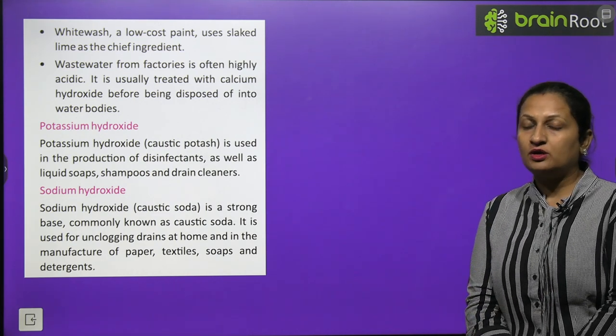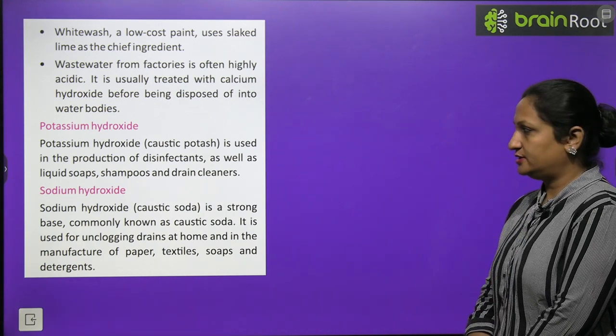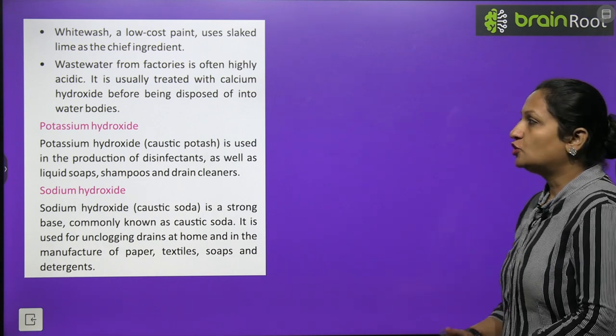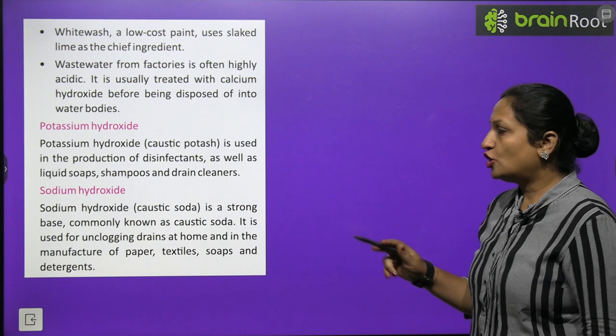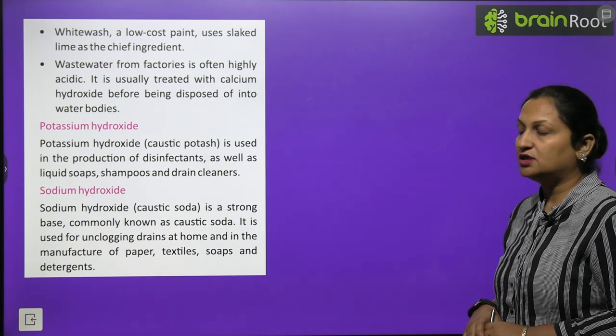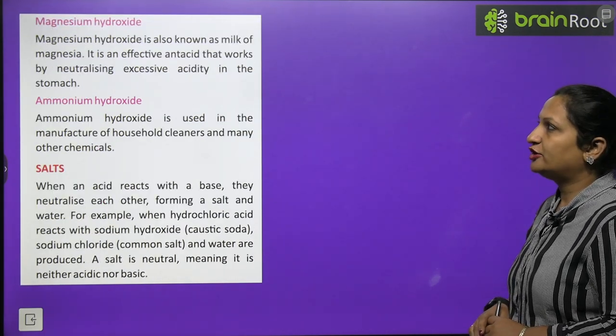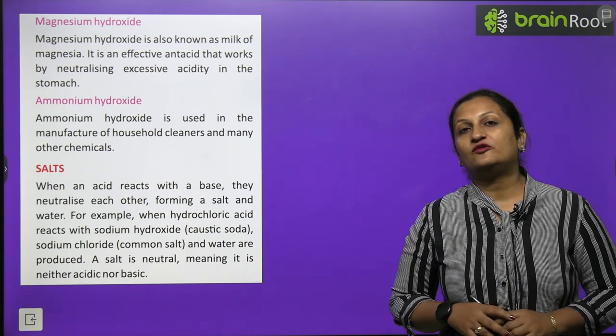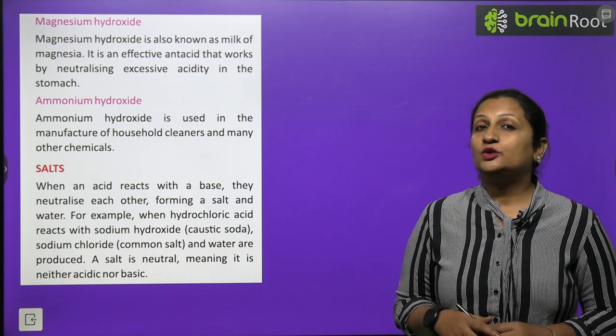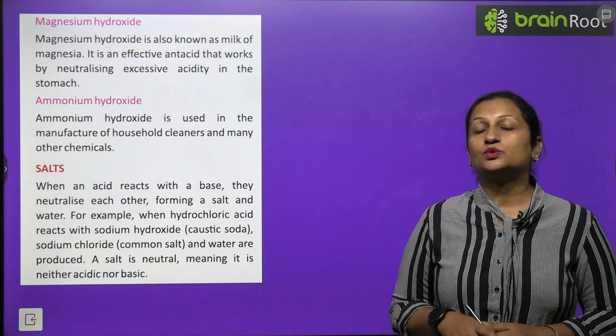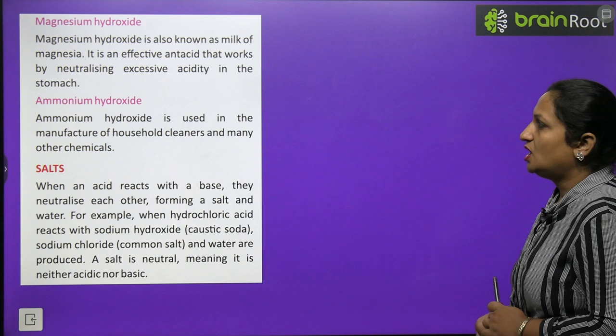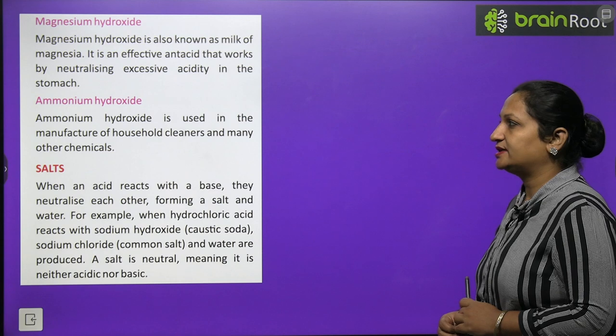Potassium hydroxide, caustic potash, is a very strong base which is used in the production of disinfectants, liquid soaps, shampoos, and drain cleaners. Sodium hydroxide is a strong base, commonly known as caustic soda. Potassium hydroxide we call caustic potash, and sodium hydroxide we call caustic soda. It is used for unclogging drains at homes and in manufacture of paper, textile, soaps, and detergents. Magnesium hydroxide is also known as milk of magnesia. When you have acidity, mother gives you a pink color solution, Gelusil, or she gives you Eno salt. What is actually present in it? It contains magnesium hydroxide, which neutralizes the extra acid produced in your body. Ammonium hydroxide is used in the manufacture of household cleaners as well as other chemicals.